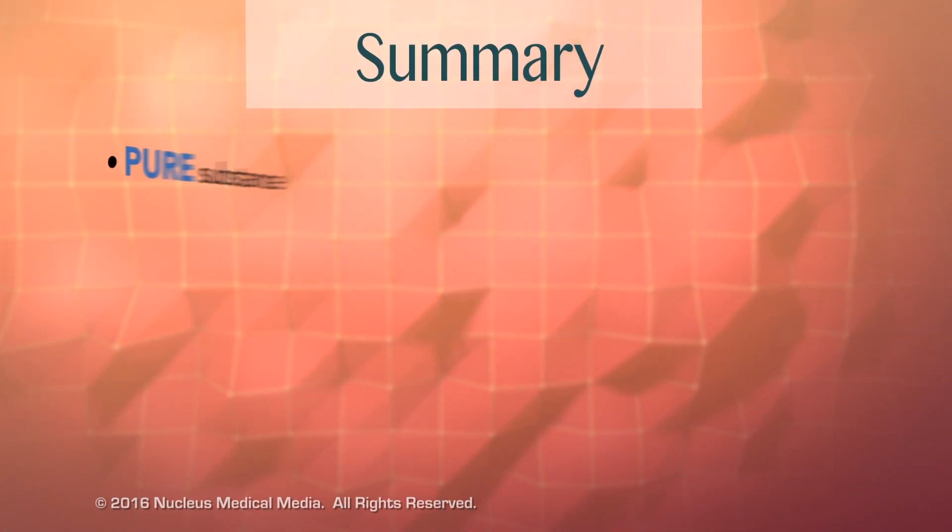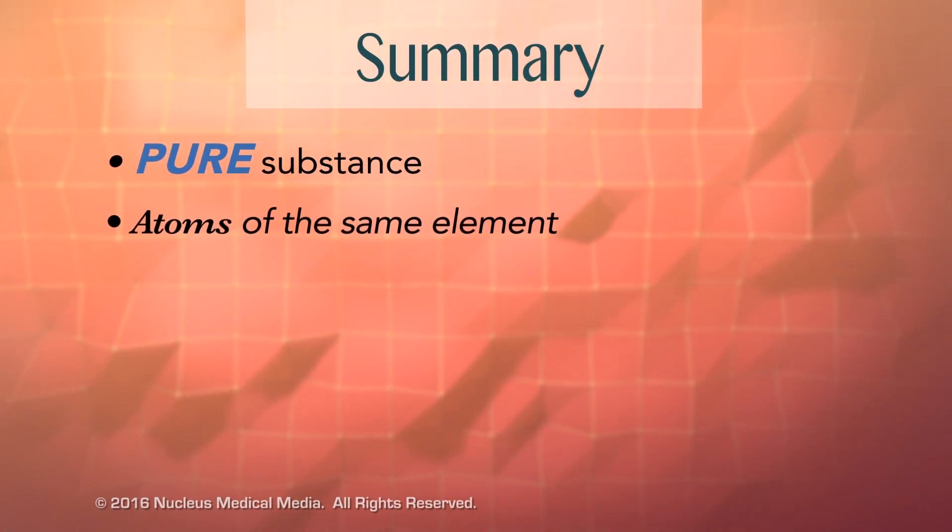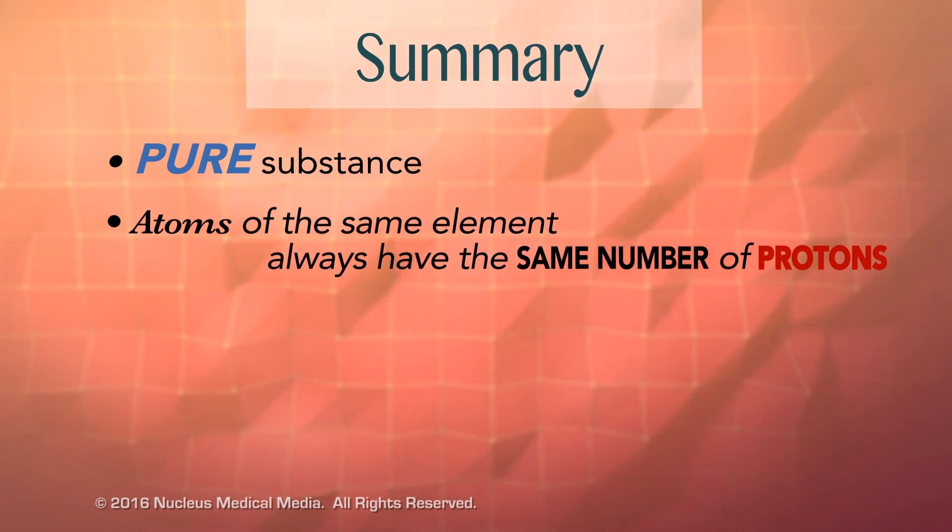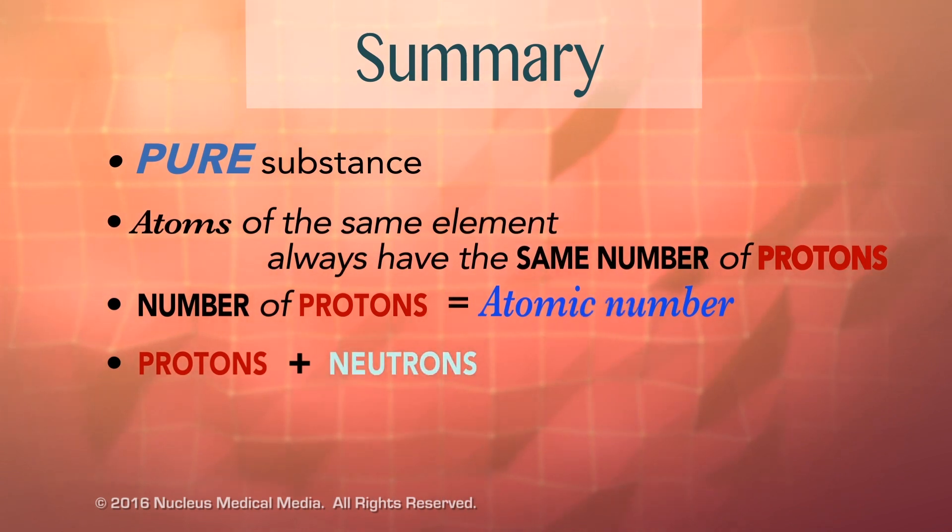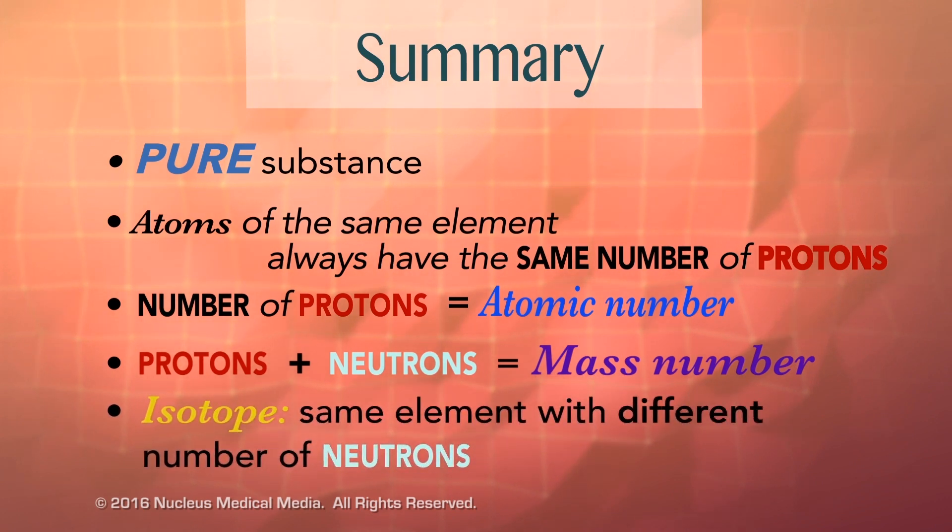To sum up, an element is a pure substance made of atoms that always have the same number of protons. This means atoms with different numbers of protons are different elements. The number of protons in one atom of an element is called the atomic number. The number of protons plus neutrons in one atom is called the mass number. Isotopes are atoms of the same element with different numbers of neutrons.